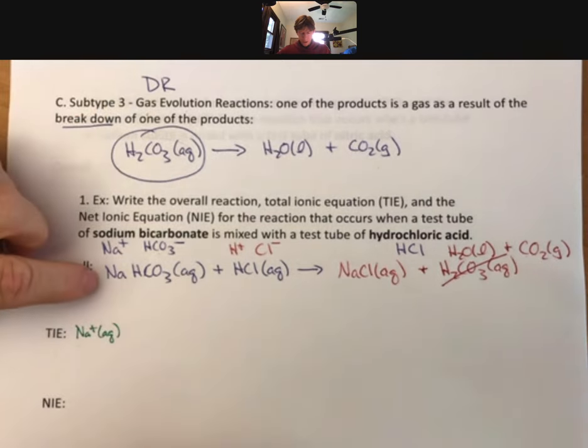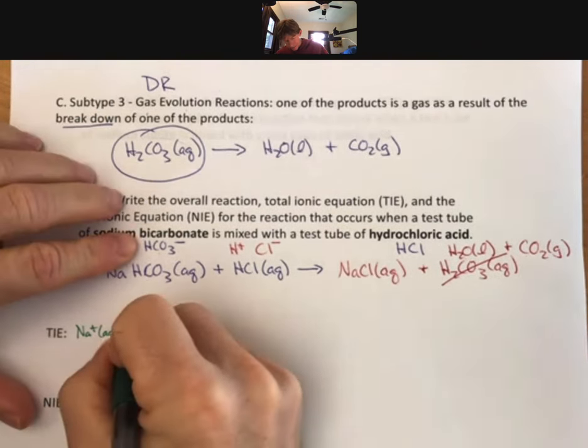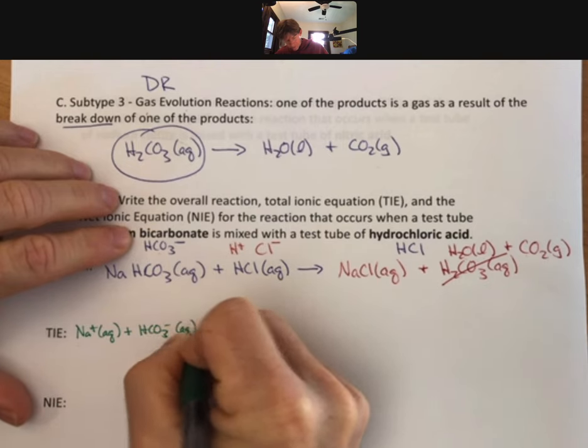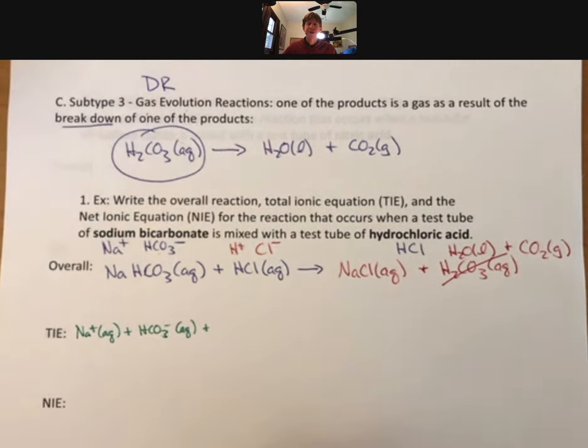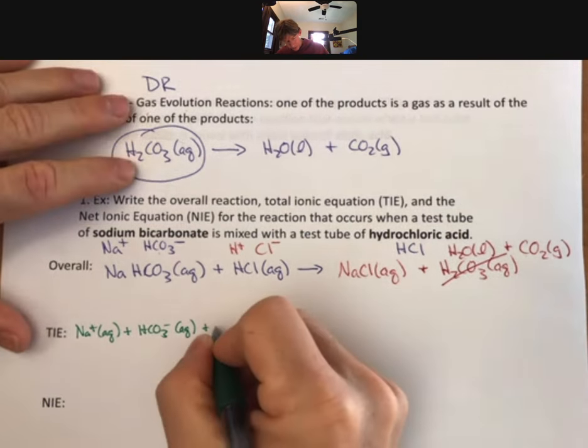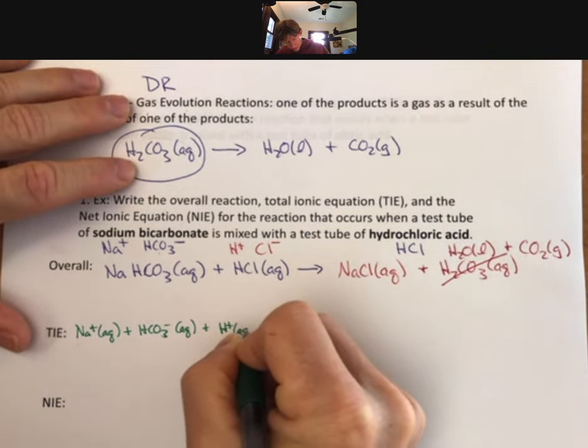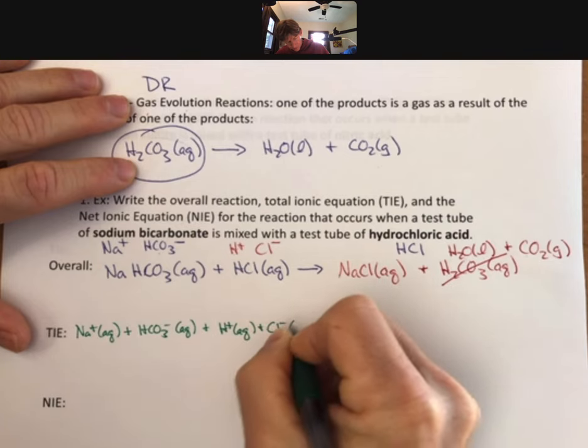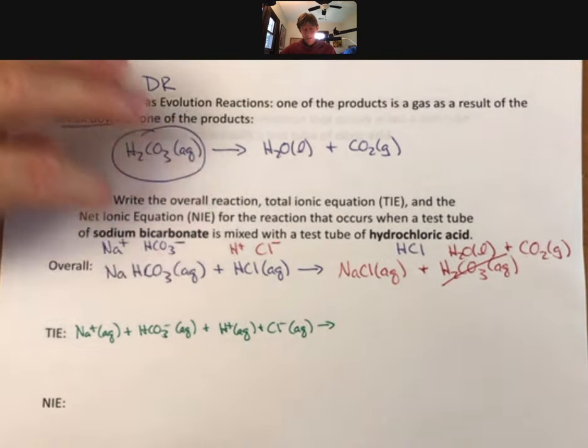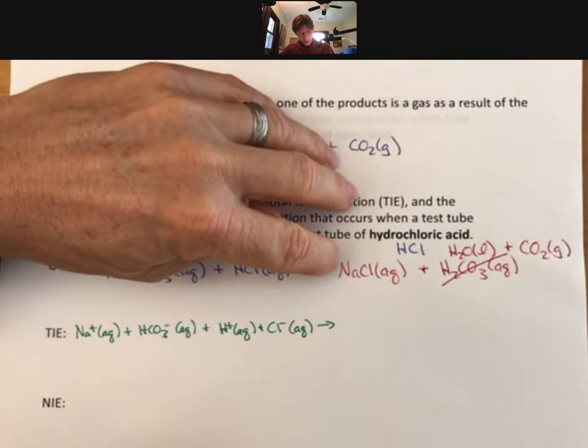We get our sodium ion, which is aqueous, our bicarbonate ion, or hydrogen carbonate ion. So if you put it into the homework, you can't write bicarbonate, you can only write hydrogen carbonate. Break them down into their ions. Break it down, it's aqueous, into its ions.